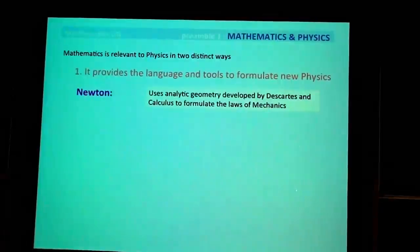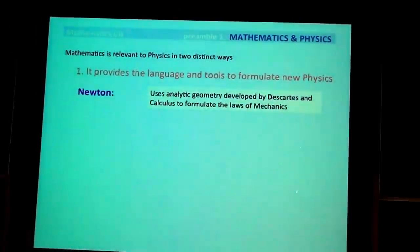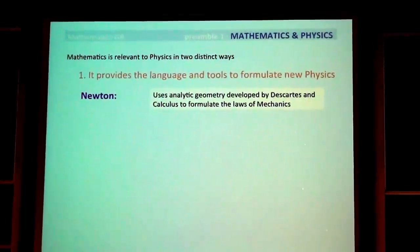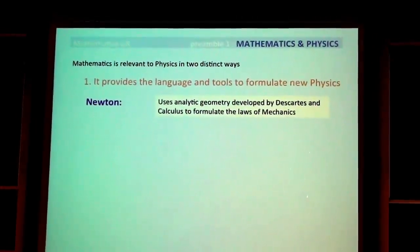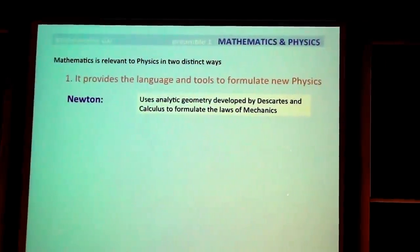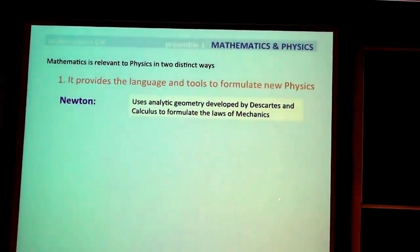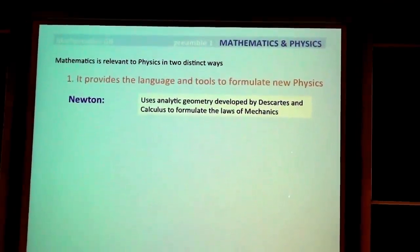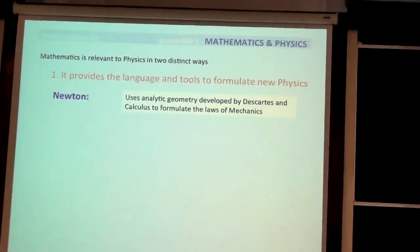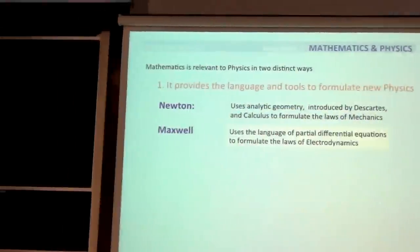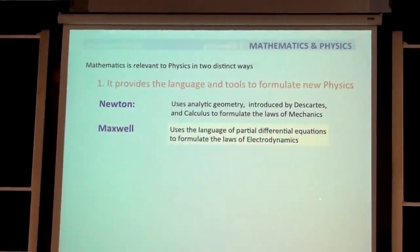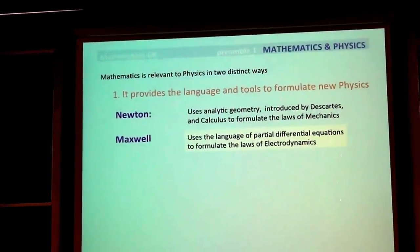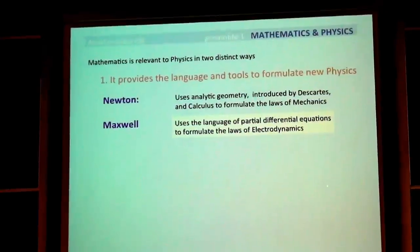Newton used analytic geometry, which was invented by Descartes a few years before, and calculus, which was invented by many people. These were used to formulate the laws of mechanics. And then, of course, Maxwell later on used the language of partial differential equations to formulate the laws of electrodynamics.